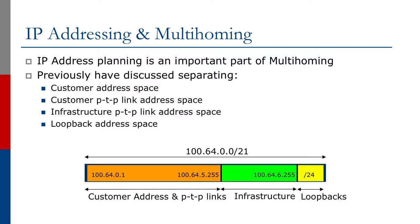Typical service provider address plans split the address space into four parts: address space for end users (the customers), address space for the link from the service provider backbone to the end user (typically point-to-point link addresses), address space for the service provider's infrastructure (the point-to-point links connecting routers across the network), and a small amount of address space for the router loopbacks.